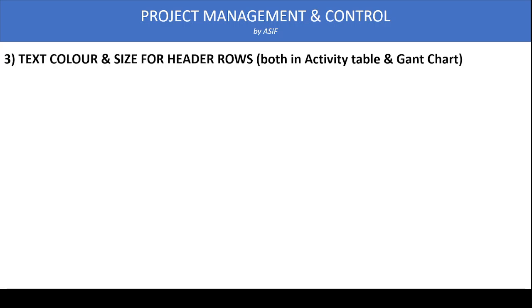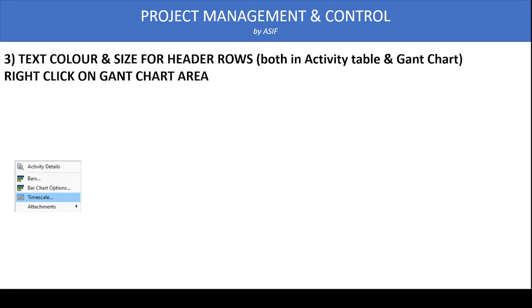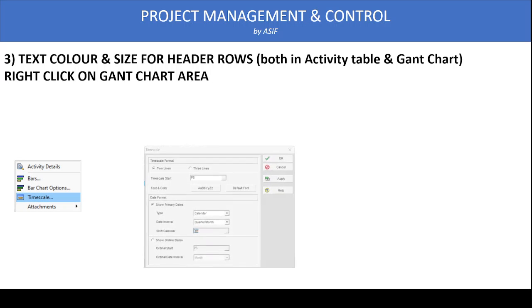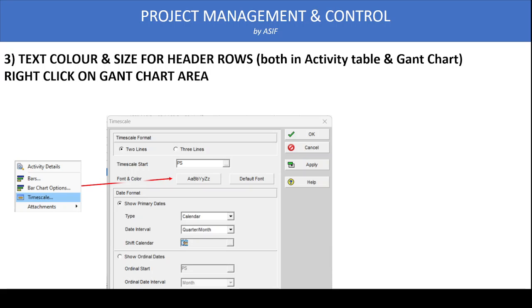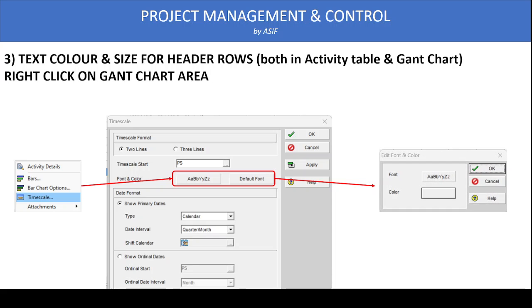Sometimes we need to modify the text color and size in the header rows. Changes made here apply to both the activity table area and the Gantt area headers. To access this, go to the Gantt chart area and double-click or right-click, then select the Time Scale option. Once the Time Scale dialog box appears, select Font and Color. The Edit Font and Color dialog box will open, from which we select the font size and color.